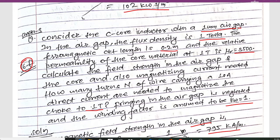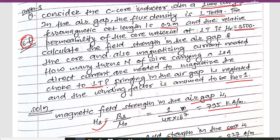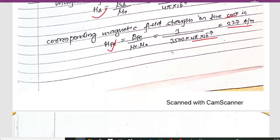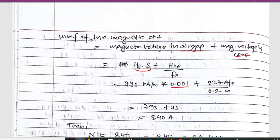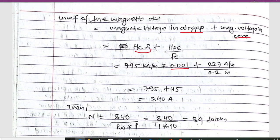The air gap is 1 mm and the ferromagnetic circuit length is 0.2 meters. Substituting all parameters and simplifying, the total MMF of the magnetic circuit is 840 amperes.